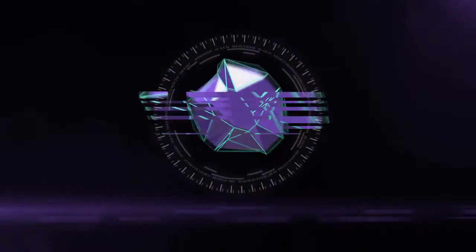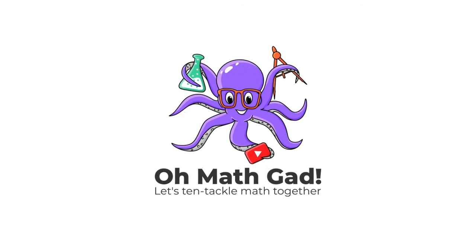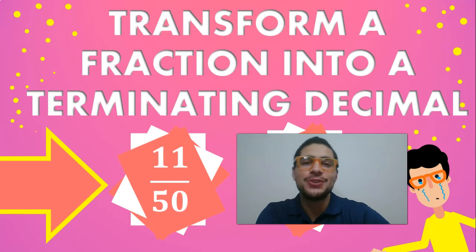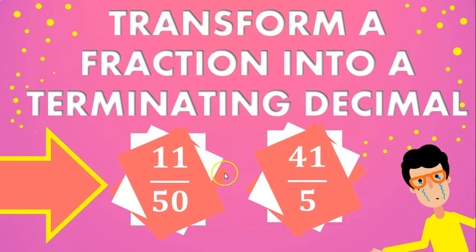Today's video is about transforming a fraction into a terminating decimal. We're going to be doing two problems. We have to remember that terminating decimals are rational numbers, and these rational numbers are fractions. So in this case, the two rational numbers we're going to be seeing are 11 divided by 50, and 41 divided by 5. Since they are rational numbers, we can express them as fractions, but we can also express them as terminating decimals.